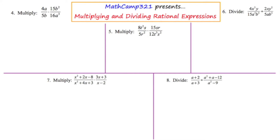For this first one, I'm going to simply multiply across on the top and again on the bottom. Focusing solely on the numerator: 4a times 15b squared is 60ab squared. Now focusing on the denominator: 5b times 16a cubed is 80a cubed b.